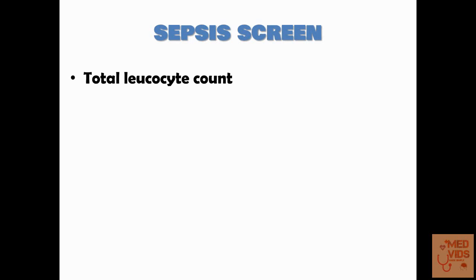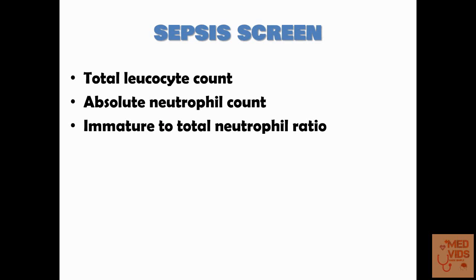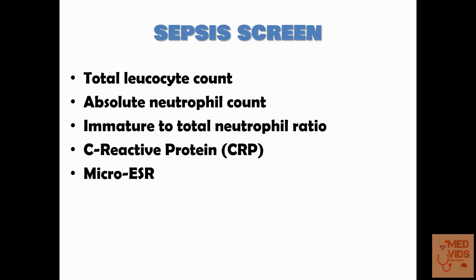Sepsis screen includes a few tests done for diagnosis of sepsis. Sepsis screen usually includes total leukocyte count, absolute neutrophil count, immature to total neutrophil count, C-reactive protein and micro-ESR. Lumbar puncture is usually not done in every child — only if you suspect meningitis in high-risk neonates should you perform lumbar puncture. The first five tests mentioned are usually involved in the sepsis screen.